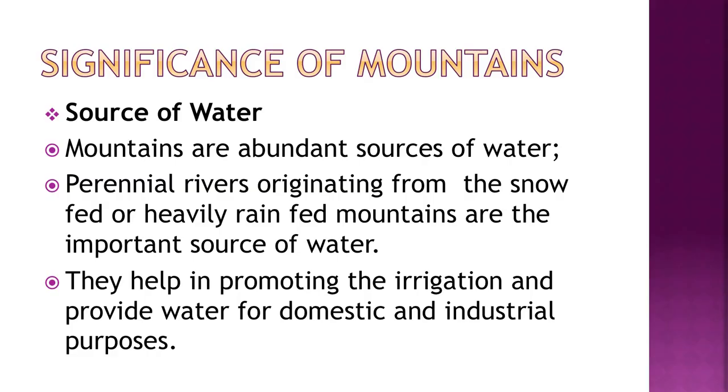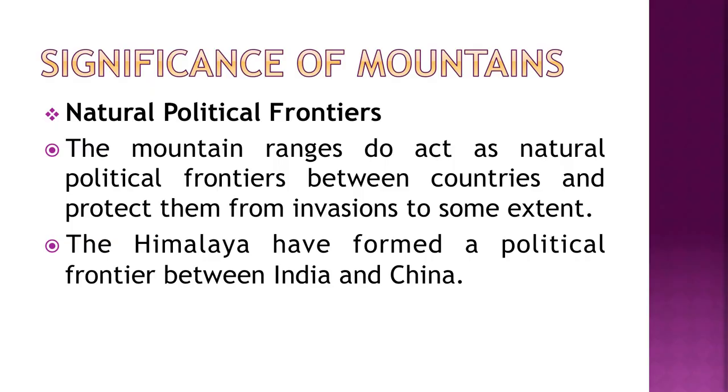Mountains are a great source of water — perennial rivers originating from snow-fed or heavily rain-fed mountains provide water for irrigation, domestic and industrial purposes. Rivers originating in high mountain regions also bring sediment deposits to lower valleys, helping form fertile plains such as the great northern plains — the Ganga, Satluj and Brahmaputra plains of India — making states like Punjab, Haryana, Uttar Pradesh, Bihar and West Bengal very rich in agriculture.